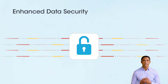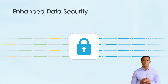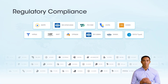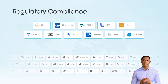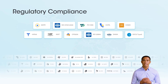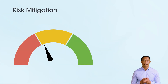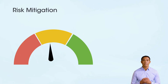By categorizing data based on sensitivity, organizations can implement tailored security measures, focusing the strongest protections on the most critical data. Data classification helps organizations identify data subject to specific regulations, ensuring compliance and avoiding significant fines and penalties. By understanding what data they have and where it resides, organizations can prioritize security efforts, focusing on high-risk data like trade secrets and intellectual property.